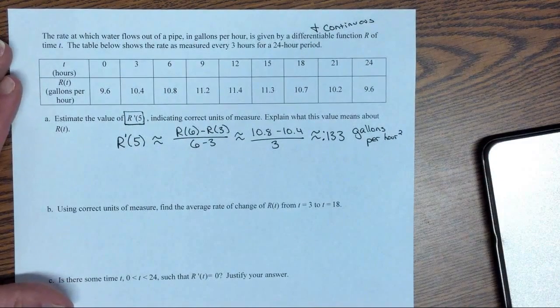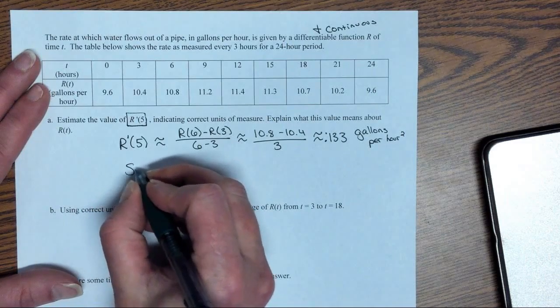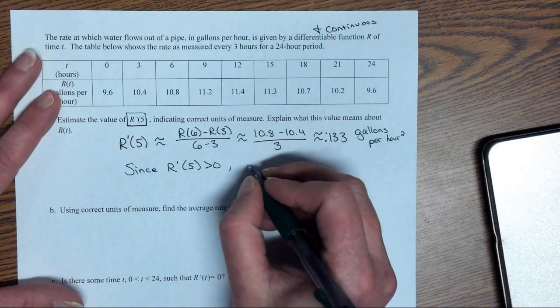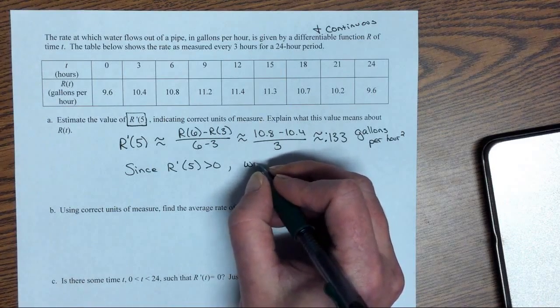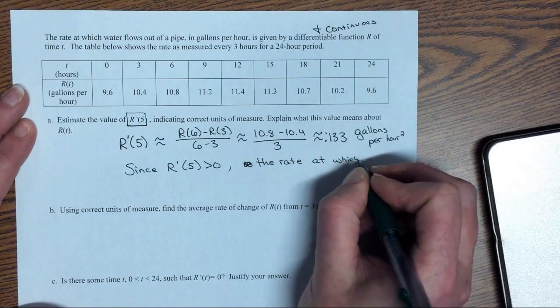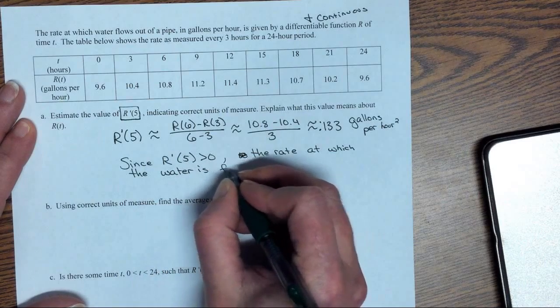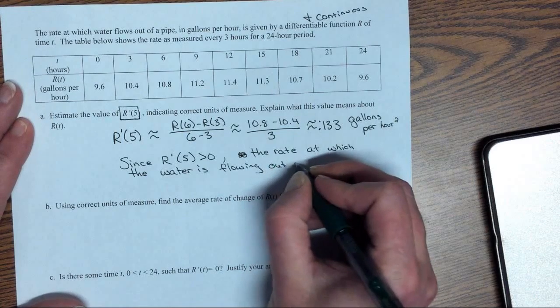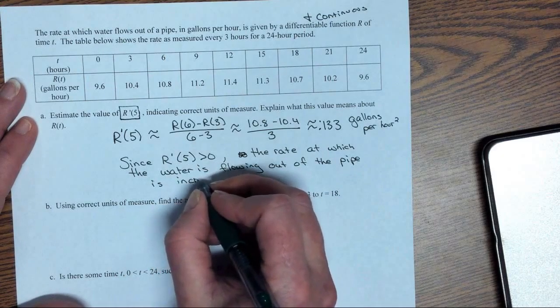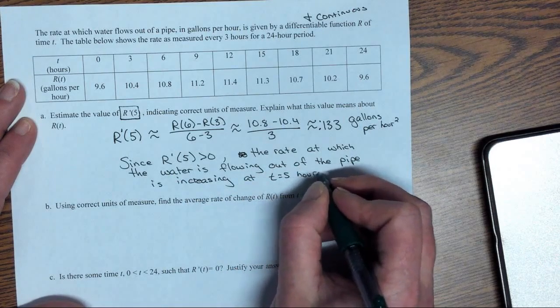Now, we also want to explain what this value means. So we have a positive first derivative. Since r'(5) is greater than 0, the rate at which the water is flowing out of the pipe is increasing after 5 hours or at time equal 5.